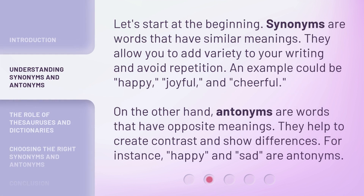Let's start at the beginning. Synonyms are words that have similar meanings. They allow you to add variety to your writing and avoid repetition. An example could be happy, joyful, and cheerful. On the other hand, antonyms are words that have opposite meanings. They help to create contrast and show differences. For instance, happy and sad are antonyms.